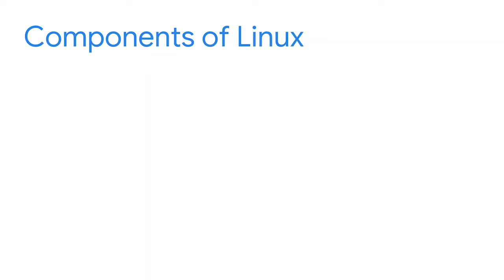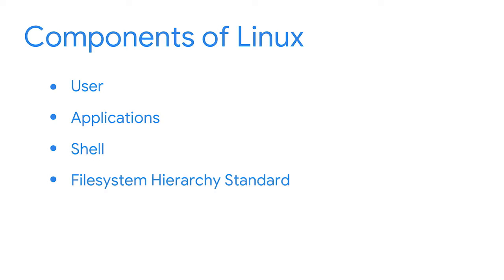Do you have a favorite building, and what is it about its architecture that impresses you the most? The windows? The structure of the walls? Just like buildings, operating systems also have an architecture and are made up of discrete components that work together to form the whole. The components of Linux include the user, applications, the shell, the file system hierarchy standard, the kernel, and the hardware.